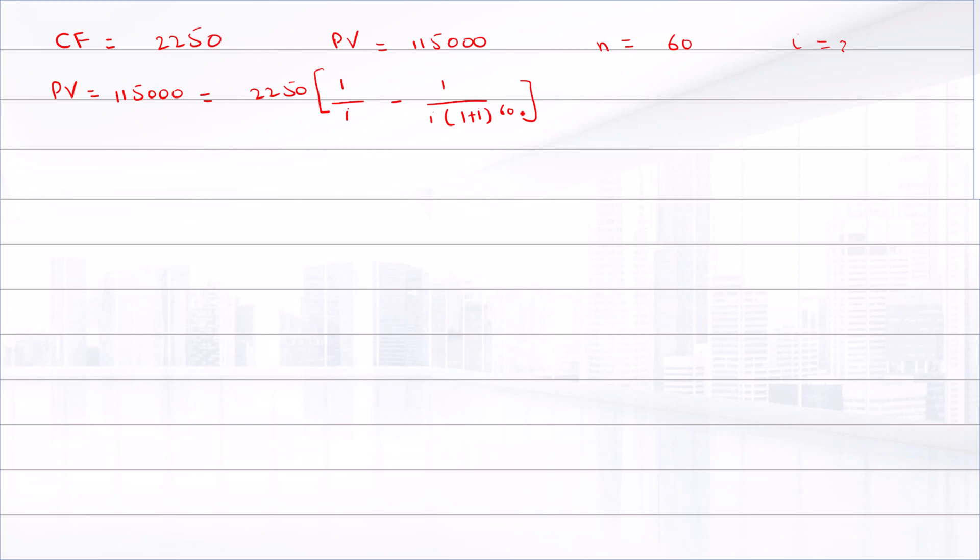So we have to try different interest rates to find the present value near to the actual present value, that is 115,000.